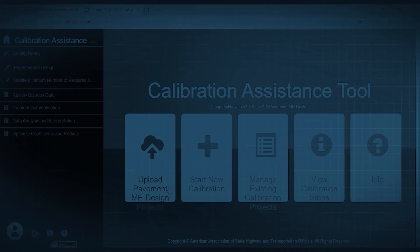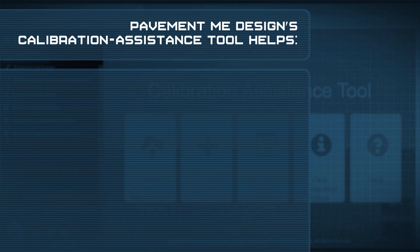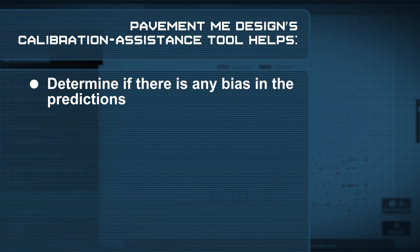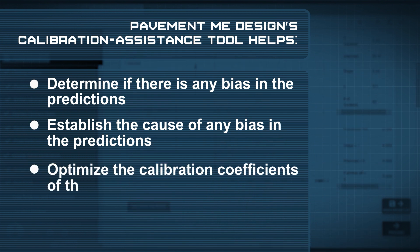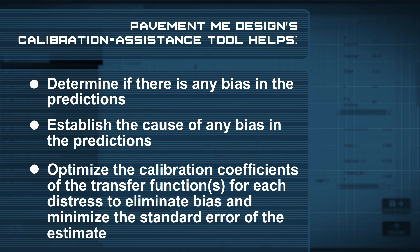AASHTO WEAR Pavement ME Design includes a calibration assistance tool to help determine if there is any bias in the predictions, establish the cause of any bias if it is found through the calibration process, and optimize the calibration coefficients of the transfer functions for each distress to eliminate bias and minimize the standard error of the estimate.